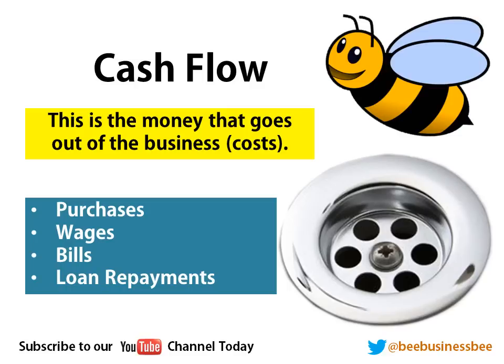All the money that goes out of the business is known as cost — these typically go down our plug hole. Examples of costs include purchases, so buying stock that we're going to sell, paying wages, bills such as electricity, gas, and telephone — remember these can be called utility bills — and payments on loans. So interest repayments on borrowed money are a cost of the business. The more we use that hot water tap, the wider we make our plug hole, because we have to pay more money back.